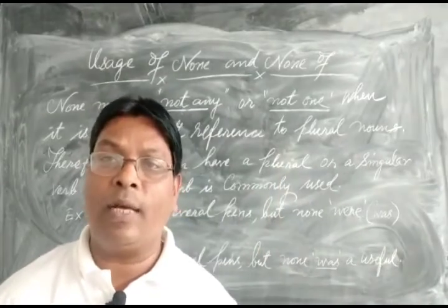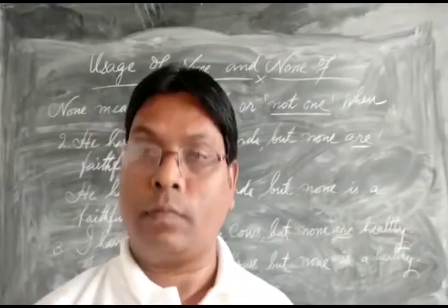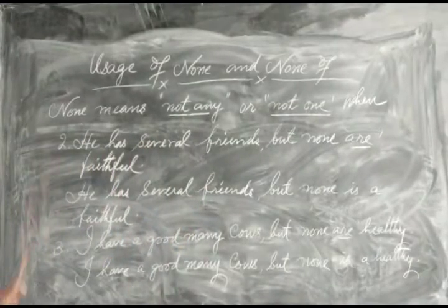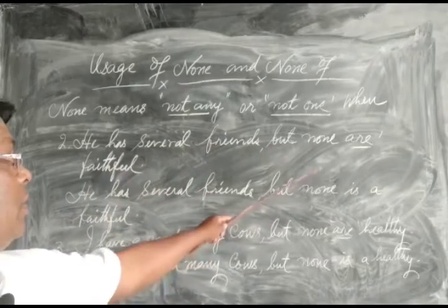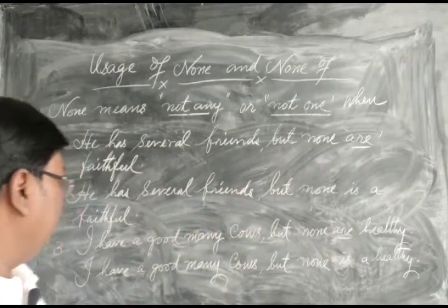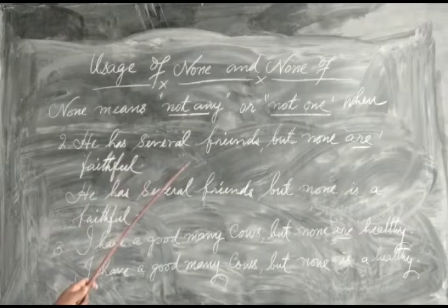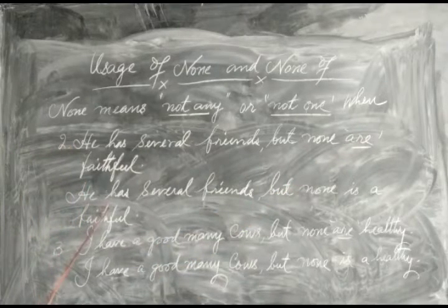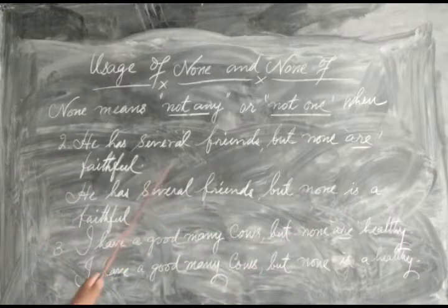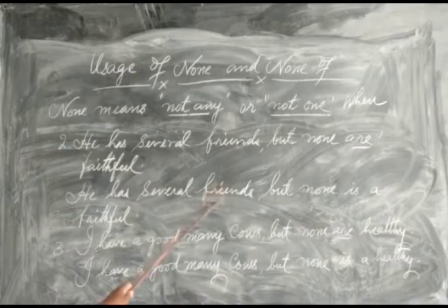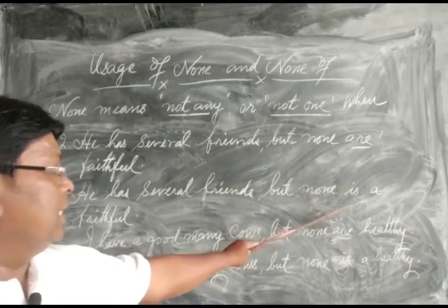Some more examples: 'He has several friends but none are faithful.' Here the plural noun 'friends' is referenced, so the verb is plural. With the understanding of singularity — referring to each individual friend — 'is' is used instead: 'He has several friends but none is faithful.'